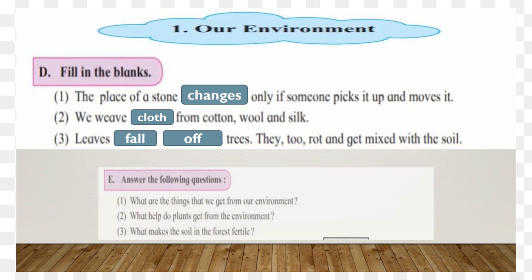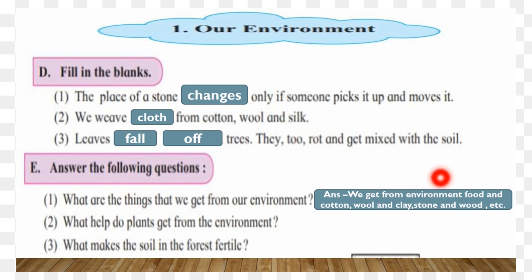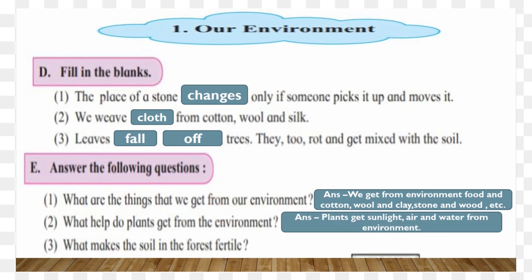Answer the following questions. What are the things we get from our environment? We get food, cotton, wool, clay, stone, and wood from our environment. What help do plants get from the environment? Plants get sunlight, air, and water from the environment.